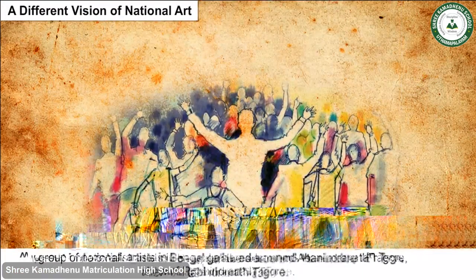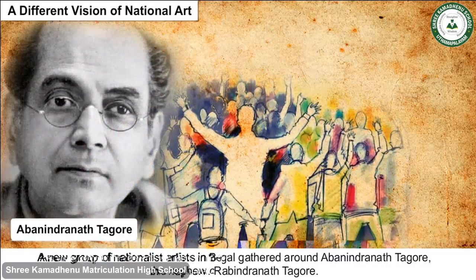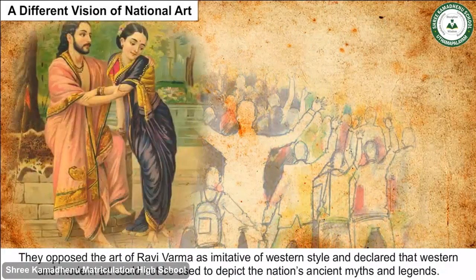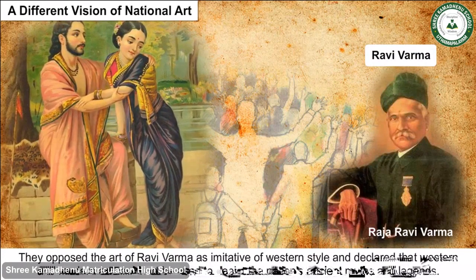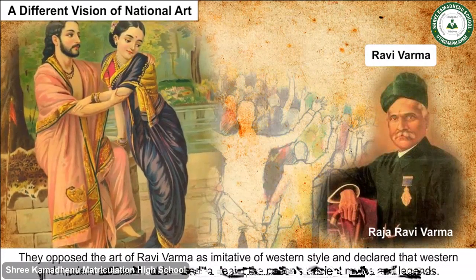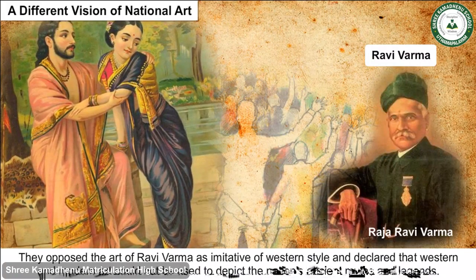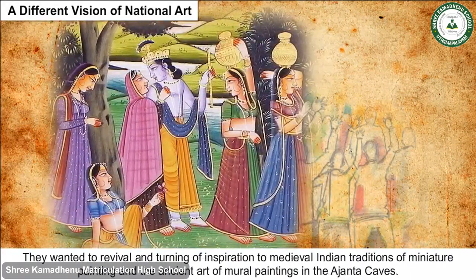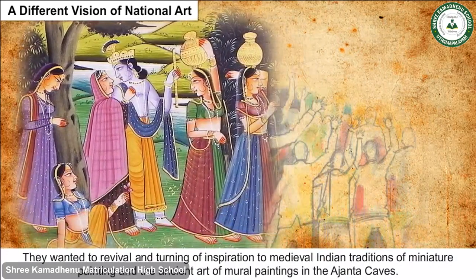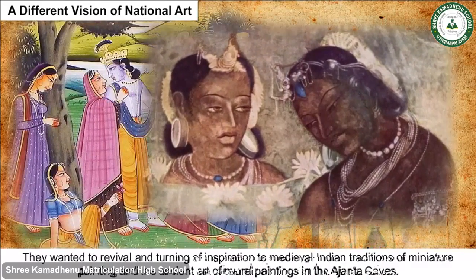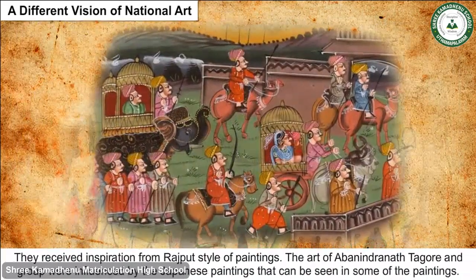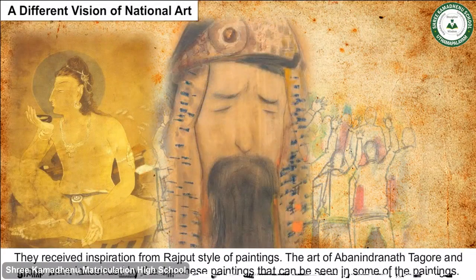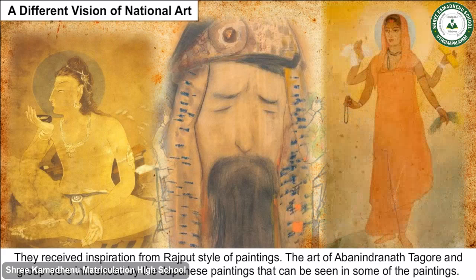A new group of nationalist artists in Bengal gathered around Abanindranath Tagore, the nephew of Rabindranath Tagore. They opposed the art of Ravi Verma as imitative of western style and declared that western and modern art could not be used to depict the nation's ancient myths and legends. They sought revival and inspiration from medieval Indian traditions of miniature painting and the ancient art of mural paintings in the Ajanta caves. They also received inspiration from Rajput style paintings, and the art of Abanindranath Tagore's group was influenced by Japanese paintings.